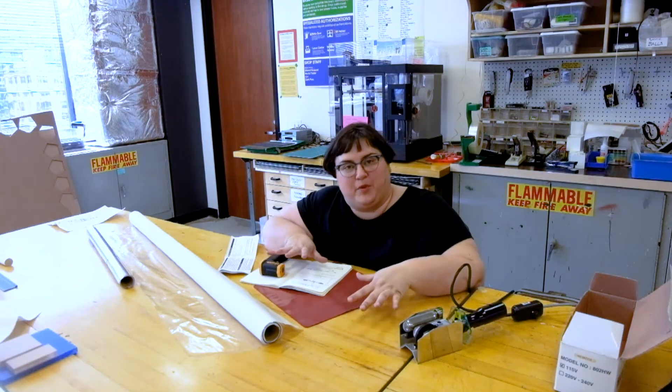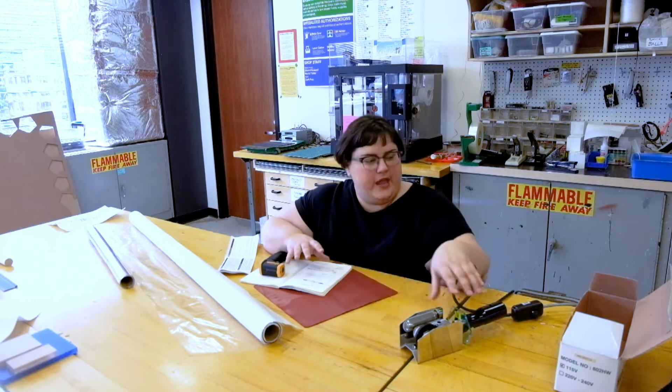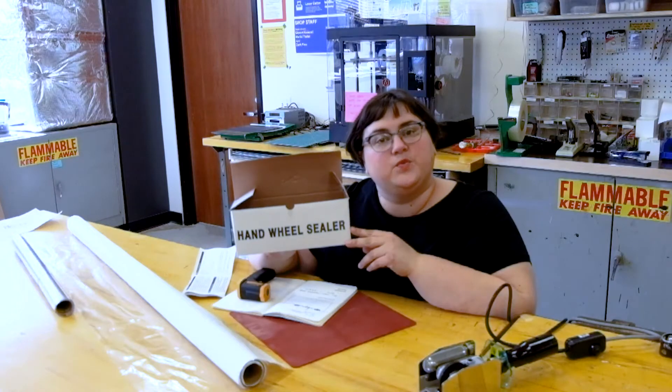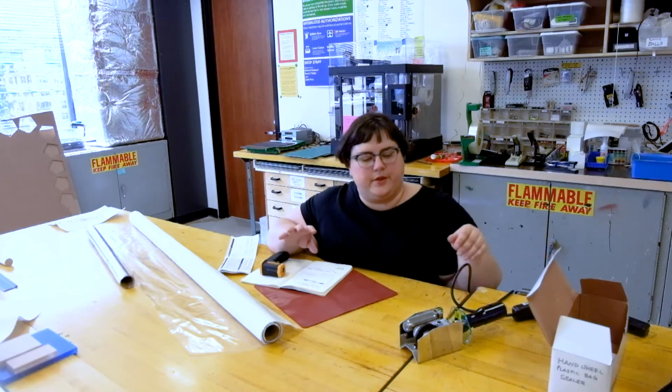Hello again. Today we're going back to the drawing board a little bit. Instead of using glue and chemicals to seal vinyl, we're going to be using heat. And we're going to be using a hand wheel sealer, or a seam sealer.